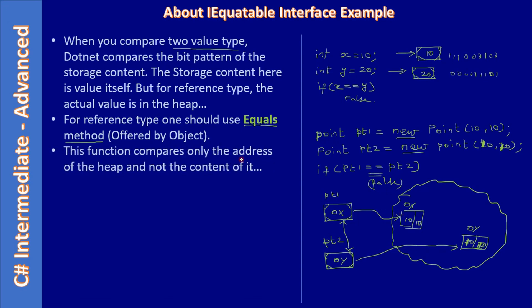This function compares only the address of the heap and not the content of it. That means whatever the equality operator is doing, the Object.Equals method also does the same. When both are pointing to the same location, Object.Equals method returns true, so in that case it's okay.